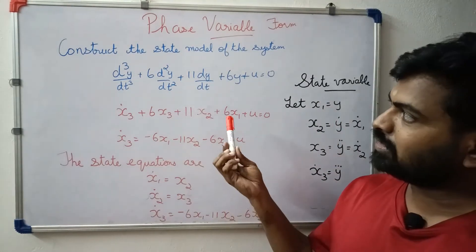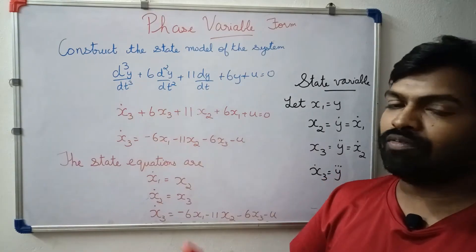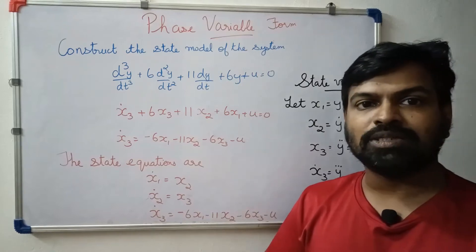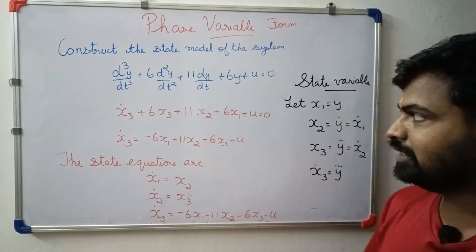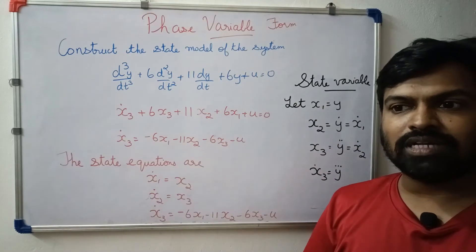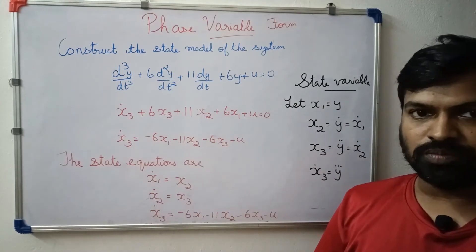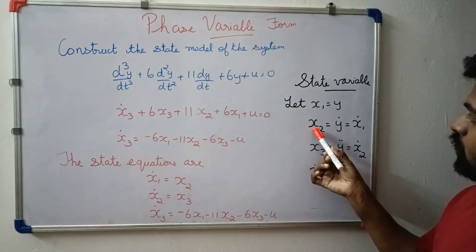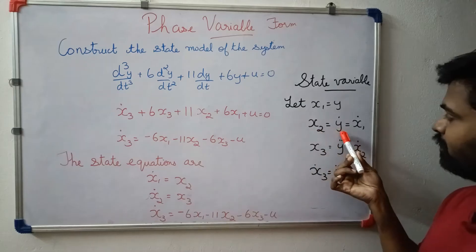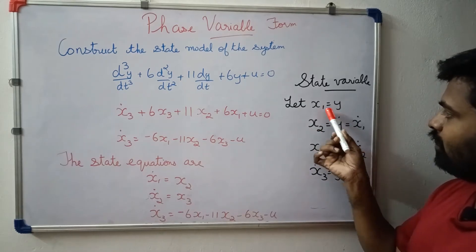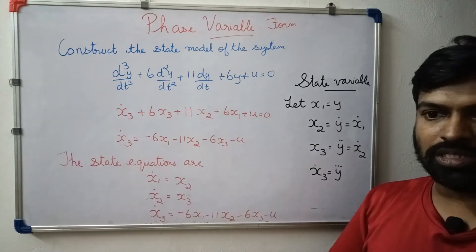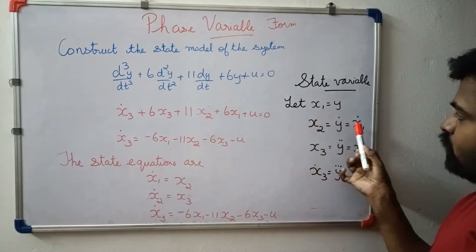We have the differential equation with the derivative of y. That variable is x1 — the first state variable. So x1 is equal to y. x2 is equal to the derivative of y, which is x1 dot.